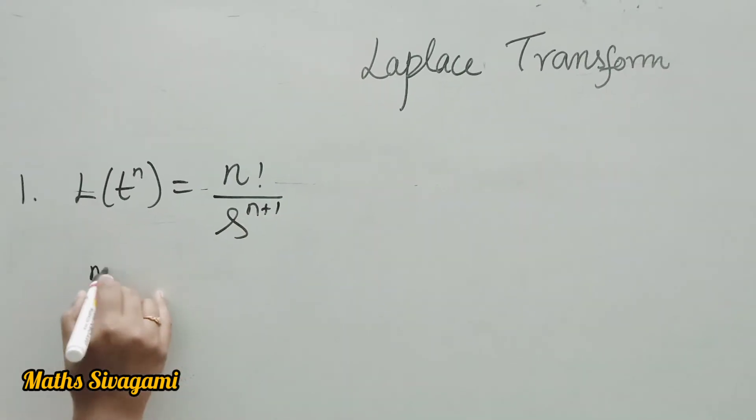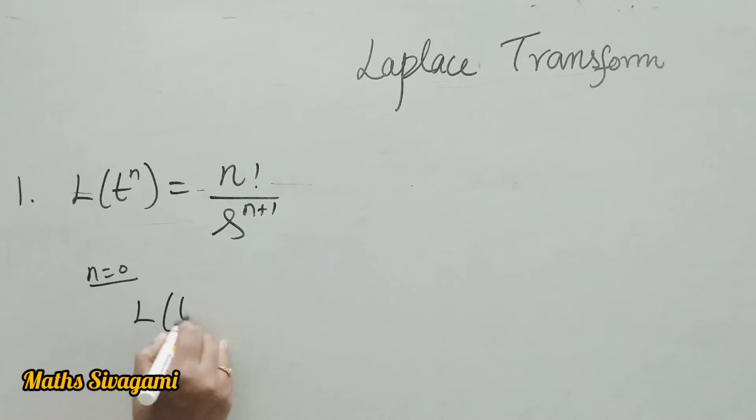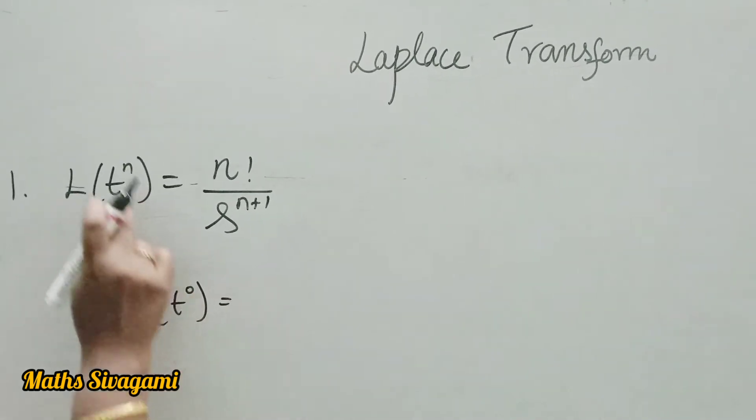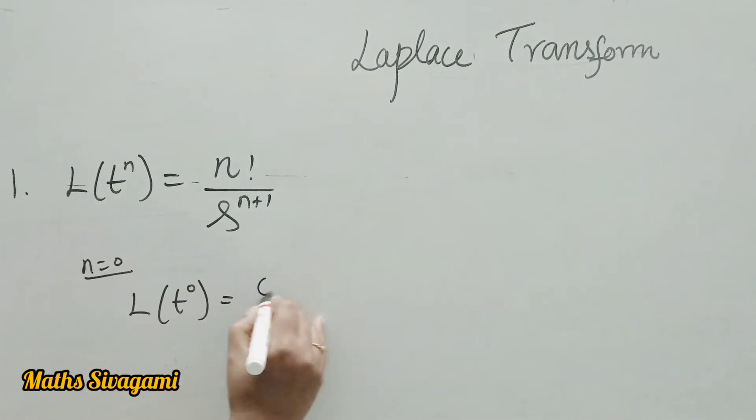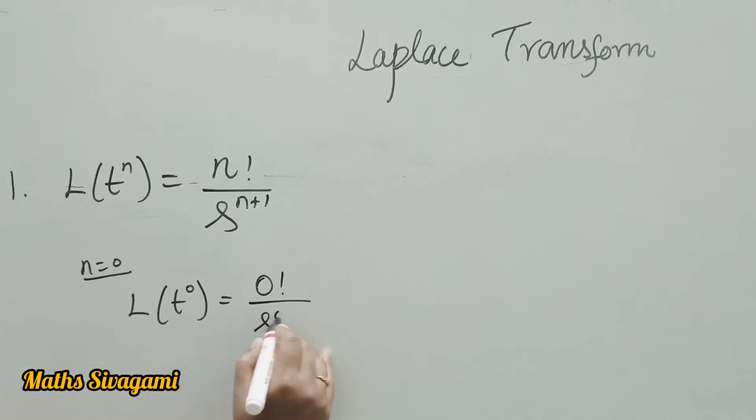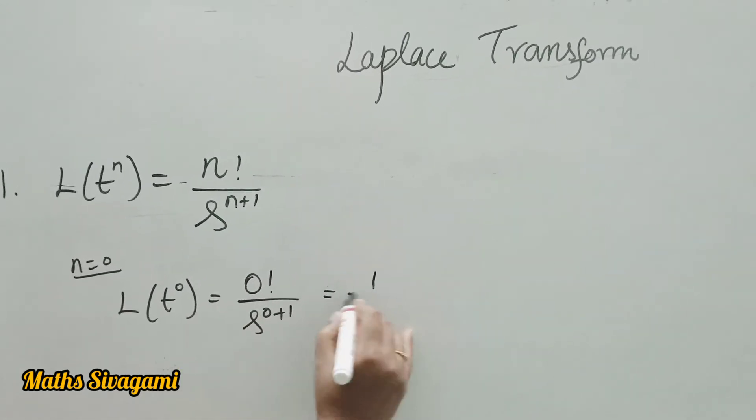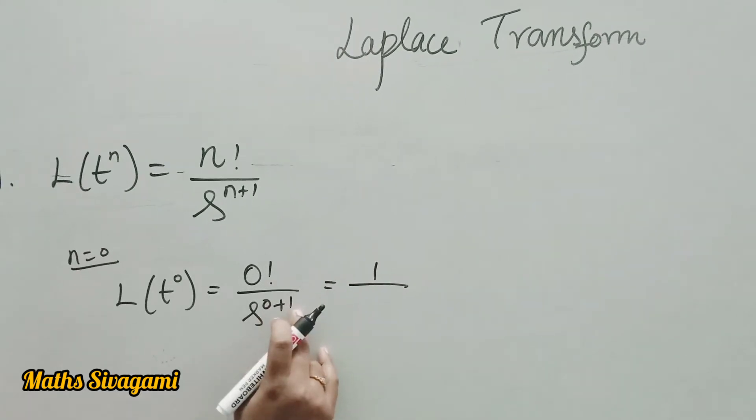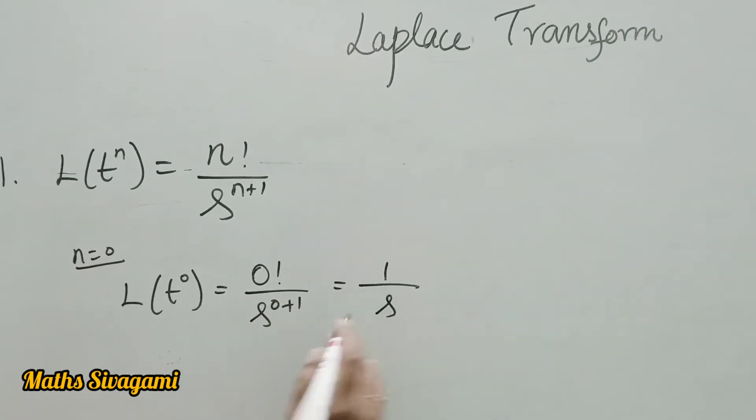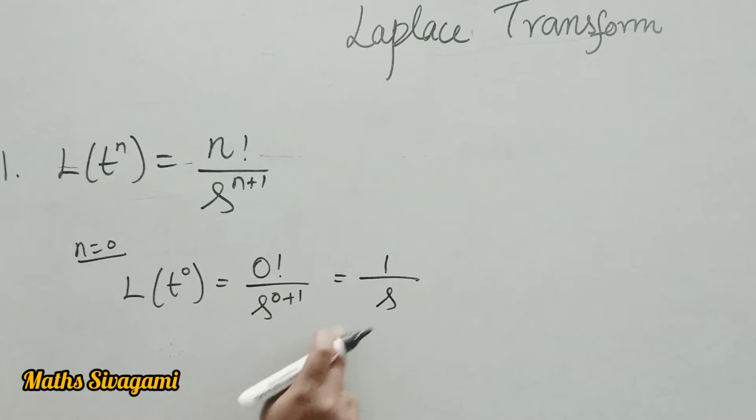If n is equal to 0, then we have L of t power 0. Put n equals 0: 0 factorial divided by s power 0 plus 1. We know that 0 factorial is 1, so 1 by 0 plus 1 is 1. Therefore, Laplace of t power 0 is 1 by s.